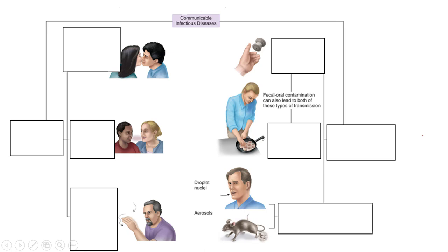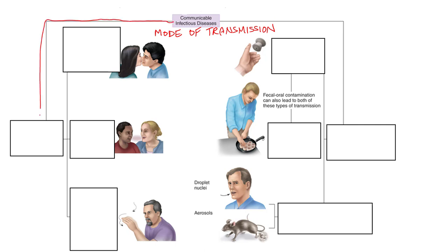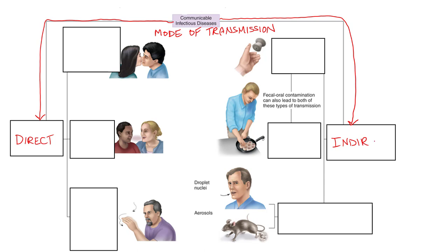Now let's look at different methods — or modes — of transmission for communicable and contagious infectious diseases. There are really two different possibilities: direct contact with the pathogen, and indirect contact, or indirect transmission of the pathogen from infected people.